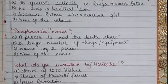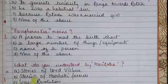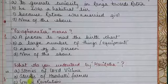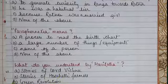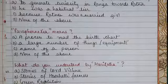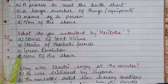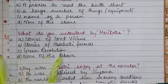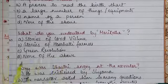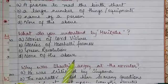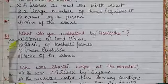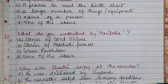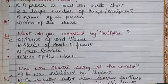What do you understand by Harikatha? Option A: Stories of Lord Vishnu, Option B: Stories of Hosahalli farmers, Option C: Green revolution, Option D: None of the above. The right answer is Option A — stories of Lord Vishnu.